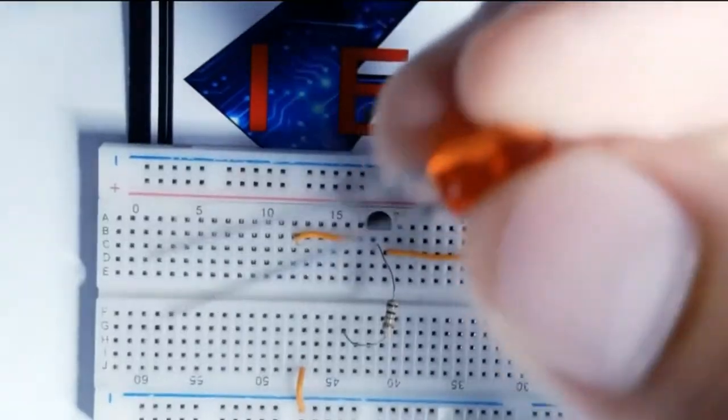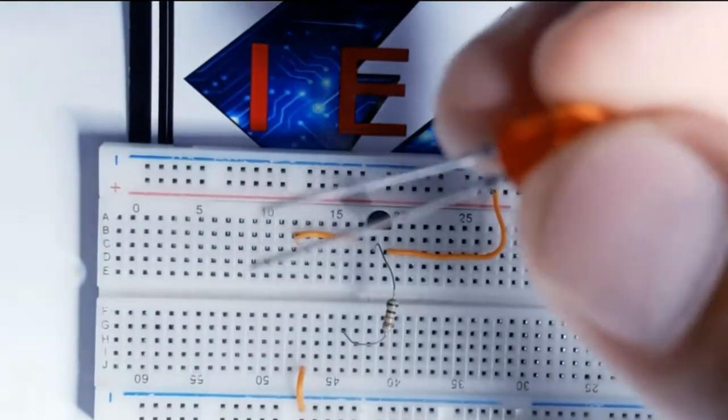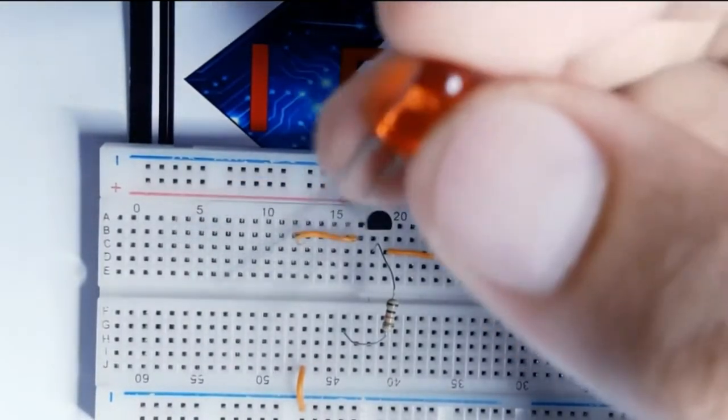The negative pin of the LED will go towards the collector of the transistor.